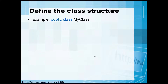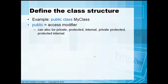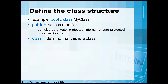Here is an example of a class: 'public class MyClass'. The class name can obviously be anything you name it. 'public' is the access modifier — you can also change that to private, protected, internal, private protected, or protected internal in C#. 'class' defines what we're dealing with, and 'MyClass' is the class name. This is very basic and meant for beginners; there is much more you can do with classes.